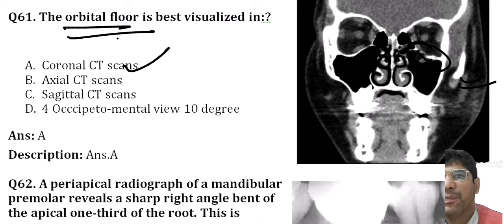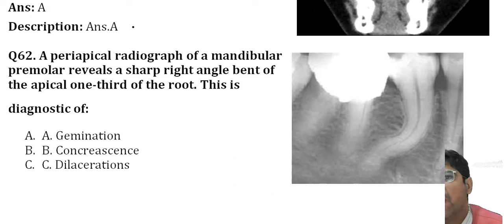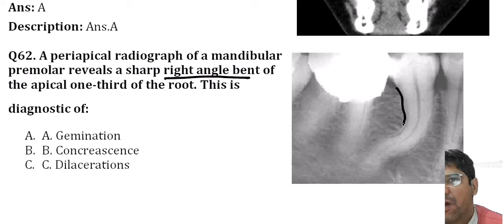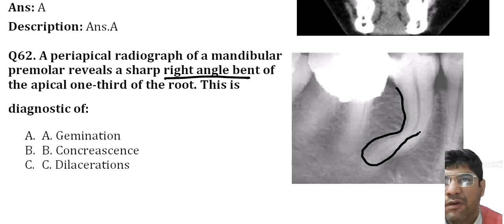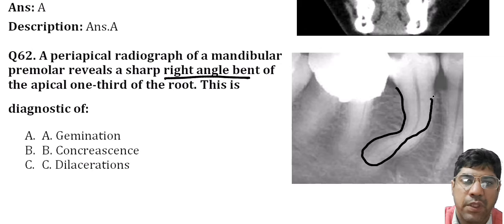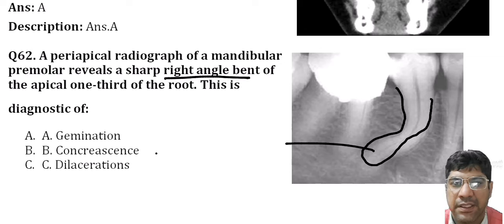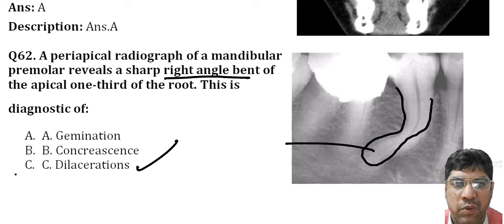A periapical radiograph of a mandibular premolar that shows a sharp right-angle bend of the apical one-third of the root would indicate dilaceration. A sharp bend or curve in the root or crown of a formed tooth is called dilaceration.